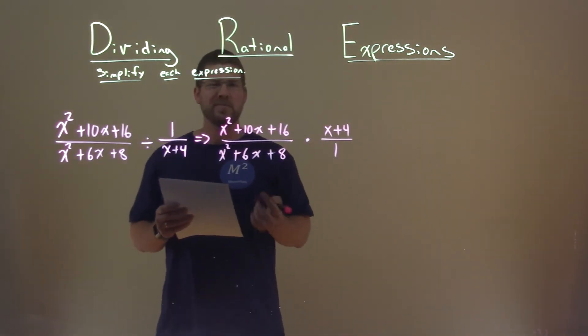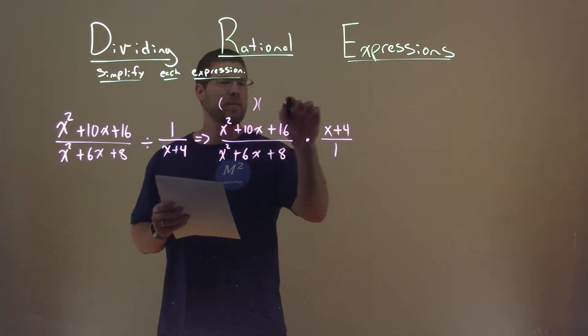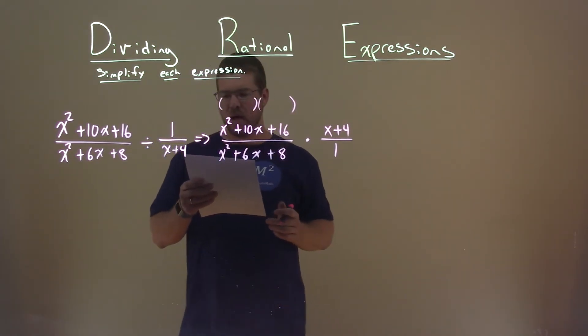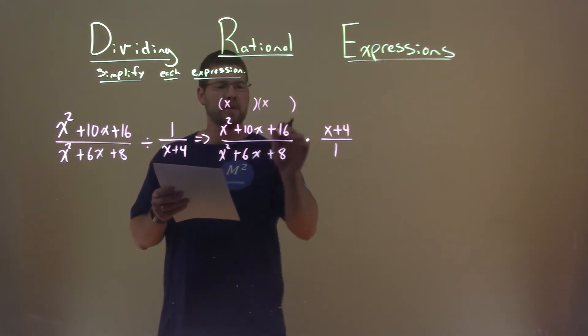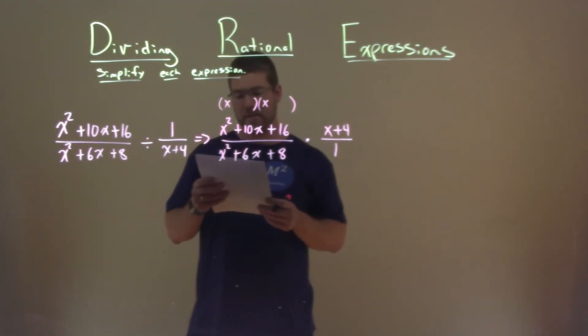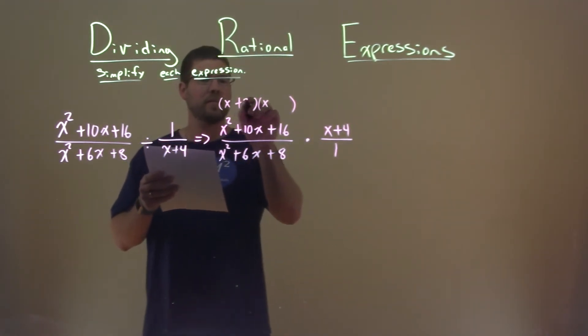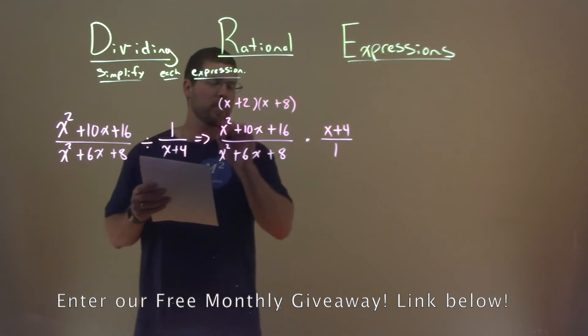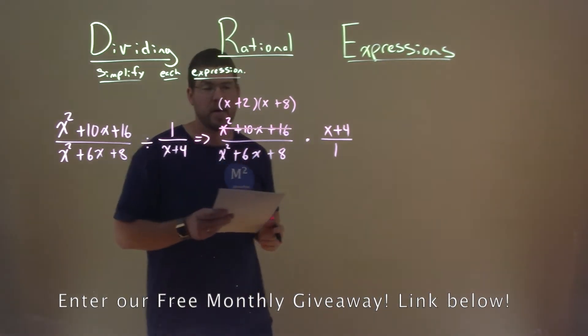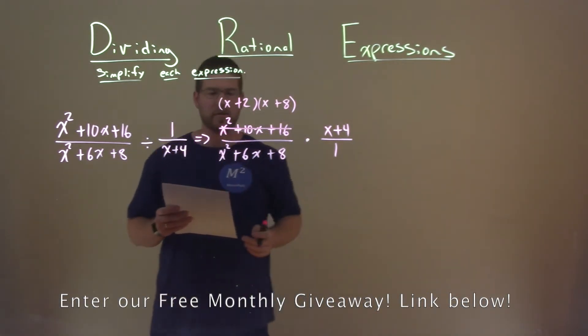Alright, so now let's go factor. These parts right here look like you can factor, and they factor out to be, well, what times multiply by 16 but add to be 10, and that's a 2 and an 8. So we replace x squared plus 10x plus 16 with our factored form.